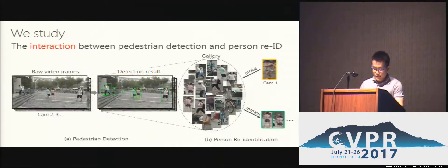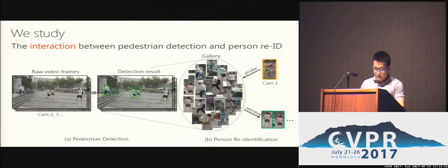Here is the pipeline of a practical person re-ID system. The system has two inputs: a query person and some raw video frames. The output is a rank list. During the offline stage, pedestrian detection is performed on the raw videos. The resulting bounding boxes form the gallery. Given the query image, the gallery images will be ranked according to their similarity to the query.